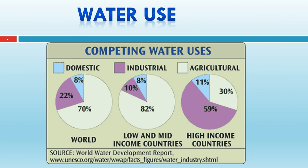In high income countries, which are mostly industrialized, 59% of water is used in the industrial sector — the biggest water use sector. About 30% water is used in agriculture, because of improved water efficiency and lower population requiring less food. On average, domestic water use is about 11%. So even though average figures look simple, when we go into detail, these figures speak a lot.